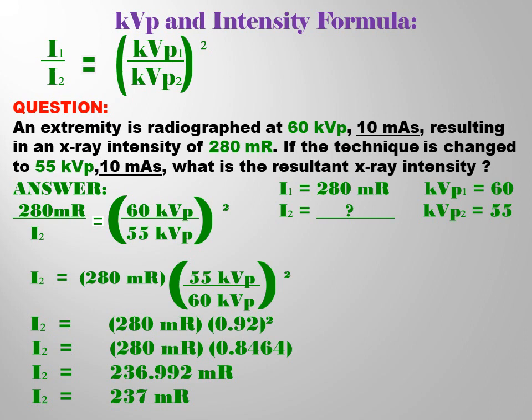So first, 55 KVP divided by 60 KVP equals 0.92 squared, and then multiply by itself equals 0.8464.